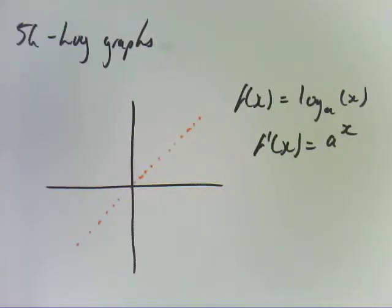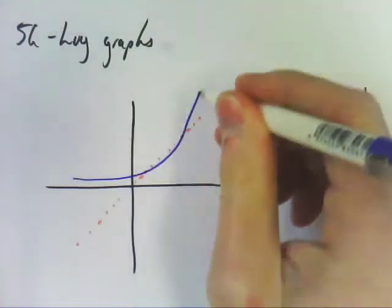So if we're drawing a to the x, what does it look like? What's an exponential graph look like? Exponential graph looks like that.